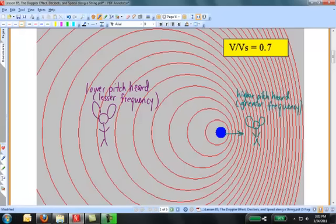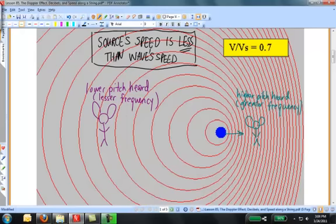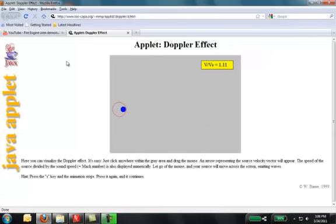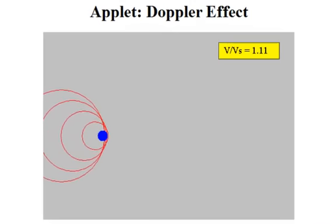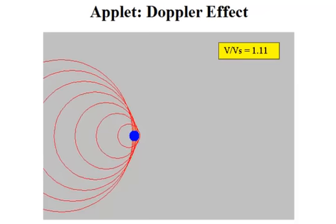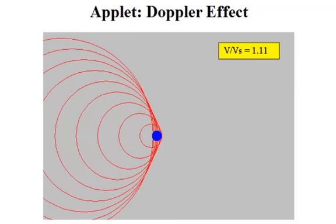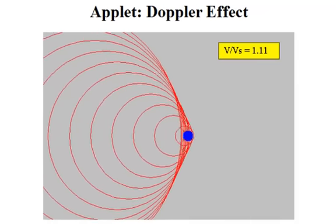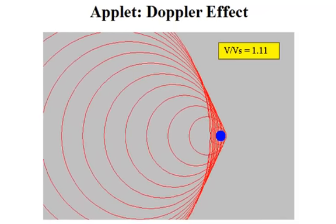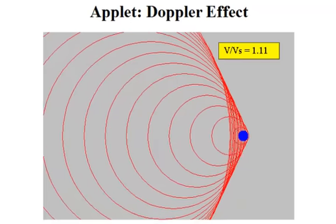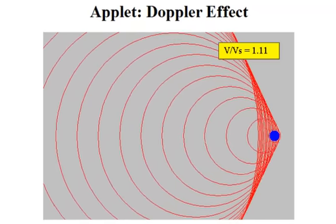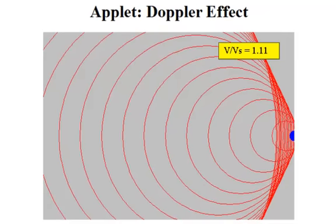In this diagram, the source is moving slower than the waves can travel in the medium of interest. But now something interesting happens if the vibrating source moves faster than the wave can travel in the material. The source outruns the wave fronts that it produces, and a wake of piled-up wave fronts emerges behind the source. You've seen this with boats on the water.